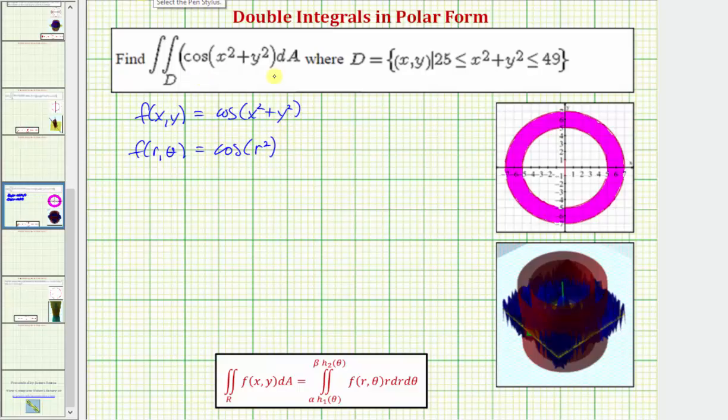So now we'll set up the double integral in polar form. We'll have f of r comma theta, which we now know is cosine r squared, and then we have r dr d theta.